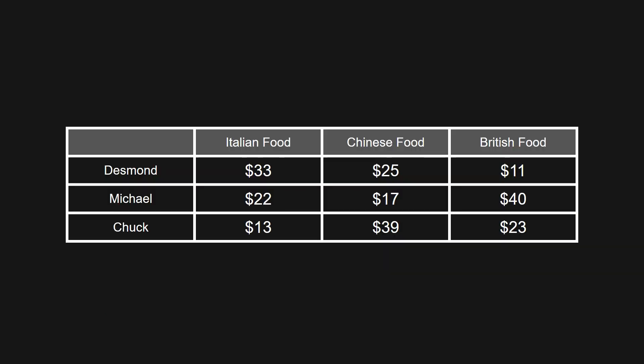These are the results you receive. There's a separate row for each friend and a separate column for each option. Desmond wrote down that he would pay $33 to get Italian food, $25 to get Chinese food, and only $11 to get British food. You'll notice the numbers match what they voted for earlier — Michael's willingness to pay for British food is highest, Chuck's is highest for Chinese food, and Desmond's is highest for Italian food.